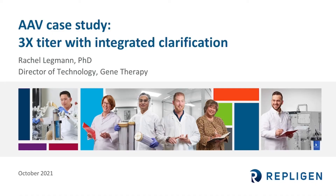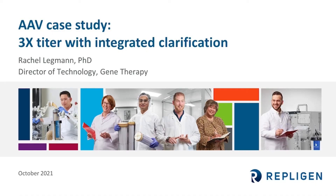Thank you for the introduction and thank you all for joining today's webinar. Today, I'm excited to invite you on the journey of what it takes to elevate your viral vector production process to the next generation, enabling you to increase your production yield by 3x fold through integration of an innovative perfusion platform that supports growth, continuous clarification, and lysate first-step clarification. So let's start.